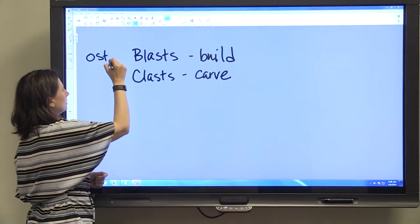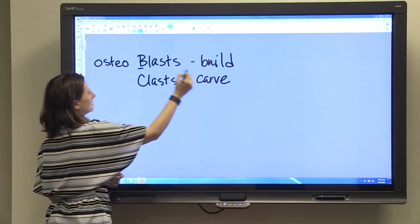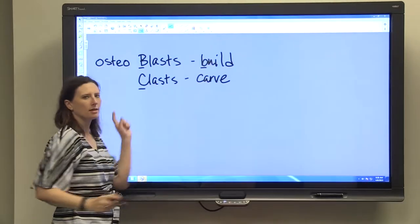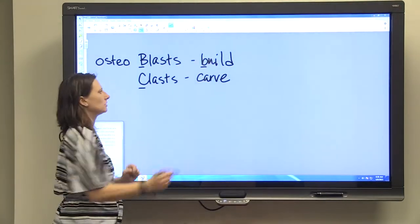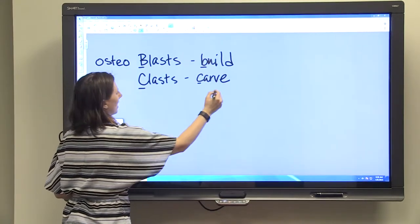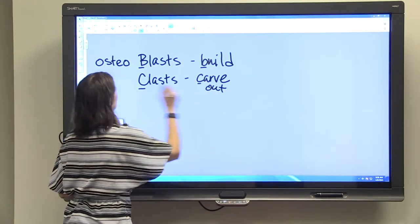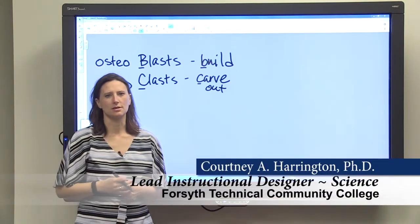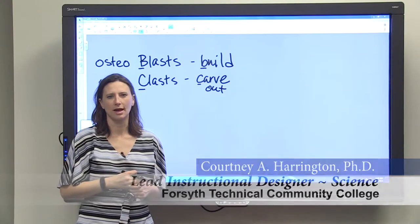And osteoclasts, the clasts break down tissue. For this, you can remember that they carve out bone. So osteoclasts carve out bone. That's just a way to remember the difference between an osteoblast and an osteoclast.